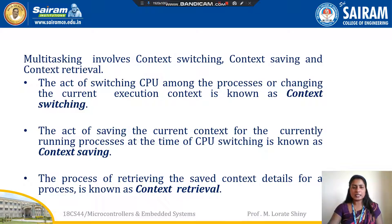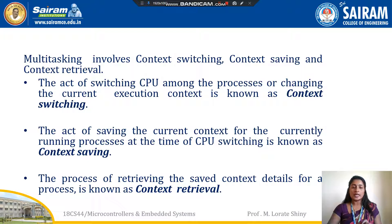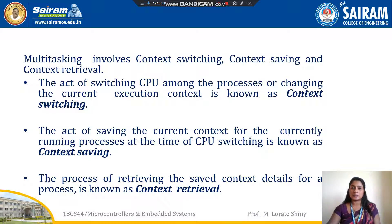Context switching is nothing but switching the CPU from executing one process to another process. Context saving involves saving the current context details such as register detail, memory detail, resources detail, and execution detail — all these for the currently executing process. Context retrieval is the act of retrieving the saved context for the process.